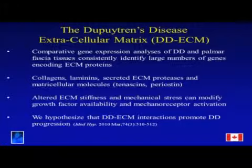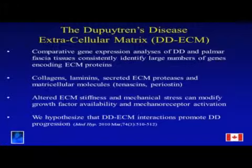Matricellular molecules, such as tenascins and periostin — we've done quite a bit of work on periostin. To define that term: matricellular molecules are molecules that are secreted into the ECM but are less than structural components. They actually act as interacting components between the cells and the ECM, modifying the cell signals that Dupuytren's disease cells get from their surrounding environment. That is a particular focus of our laboratory.